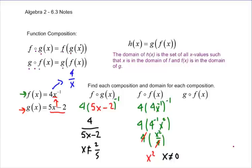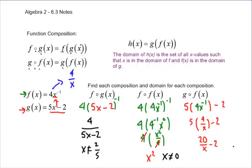For g of f of x, we take the g function — 5 times something minus 2 — and put f into it. That's 5 times (4x to the negative 1) minus 2, which is 5 times (4 over x) minus 2, giving 20 over x minus 2. Just like the previous problem, the only domain restriction is that x cannot equal 0. That's function composition using f of g and g of f — it takes a little practice.